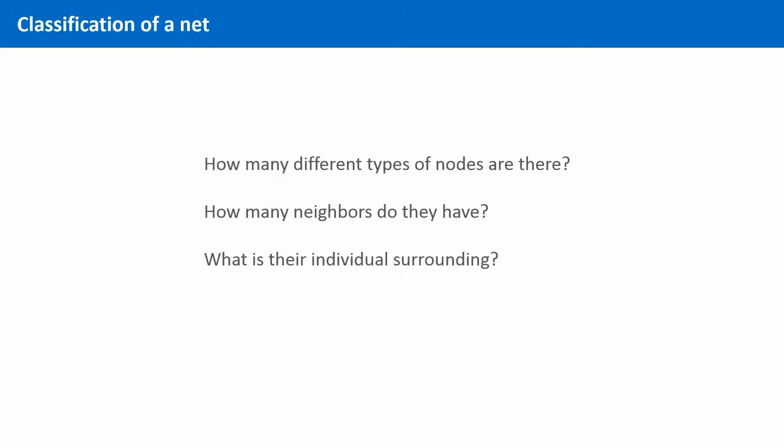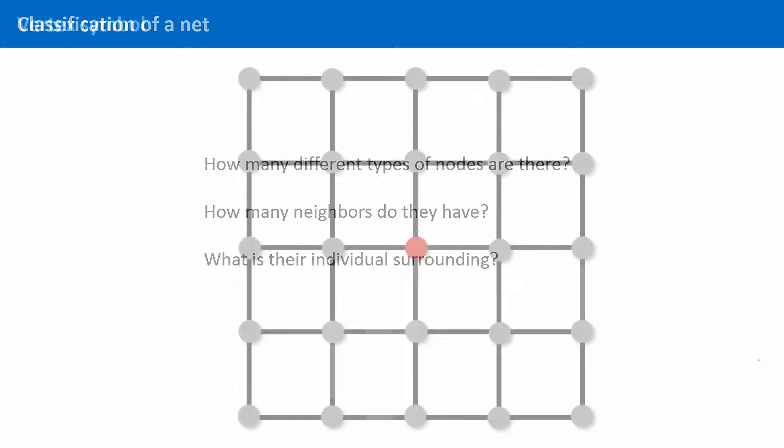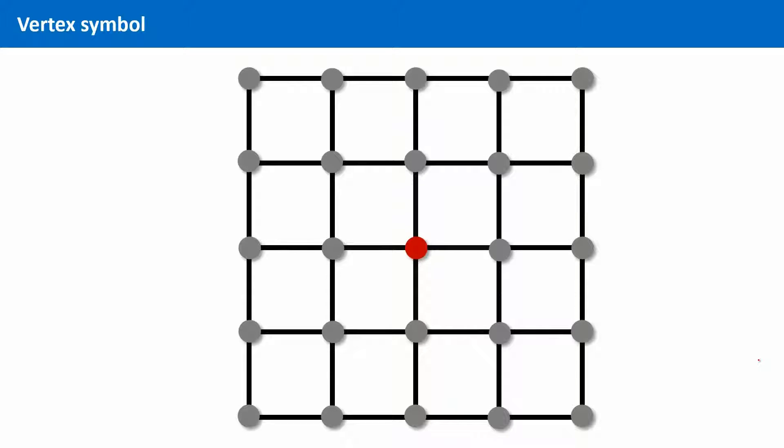But how do network topologists describe the surroundings for the different kinds of nodes? Well, they go for an imaginary walk around the network and explore the surroundings for one of each of the different kinds of vertices. Today, Frank will serve as our network topologist. And this is how he plans his walk.